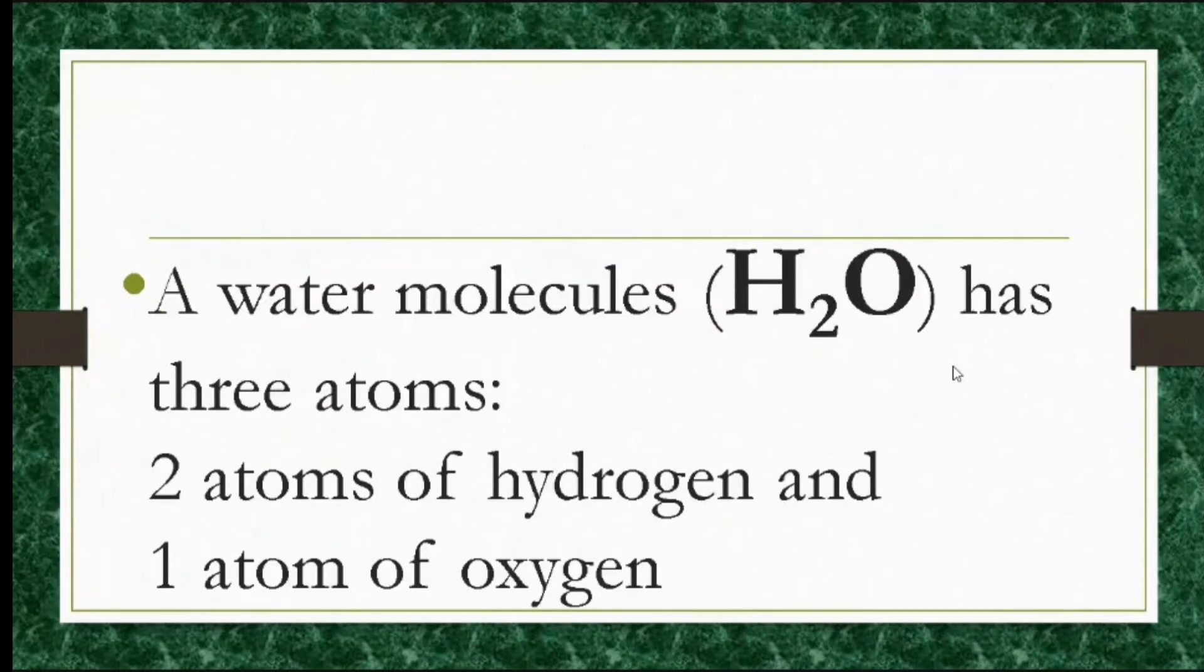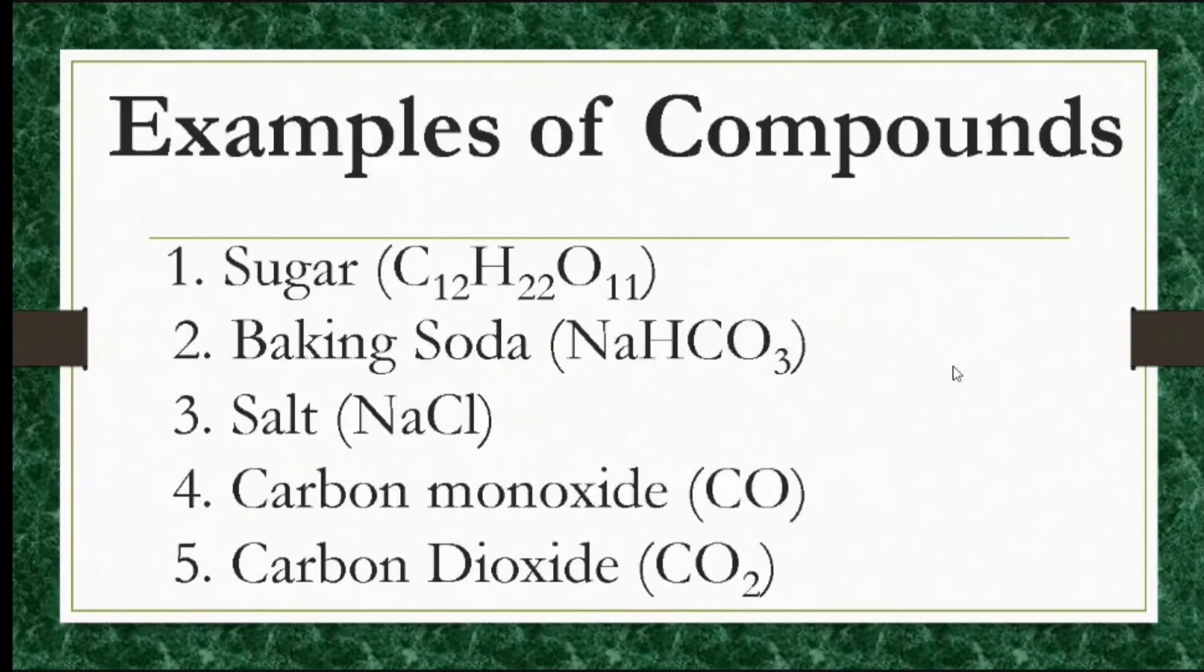Other examples of compounds and their formula are: Number 1, sugar: 12 atoms of carbon, 22 atoms of hydrogen, and 11 atoms of oxygen. Baking soda: 1 atom of sodium, 1 atom of hydrogen, 1 atom of carbon, and 3 atoms of oxygen.